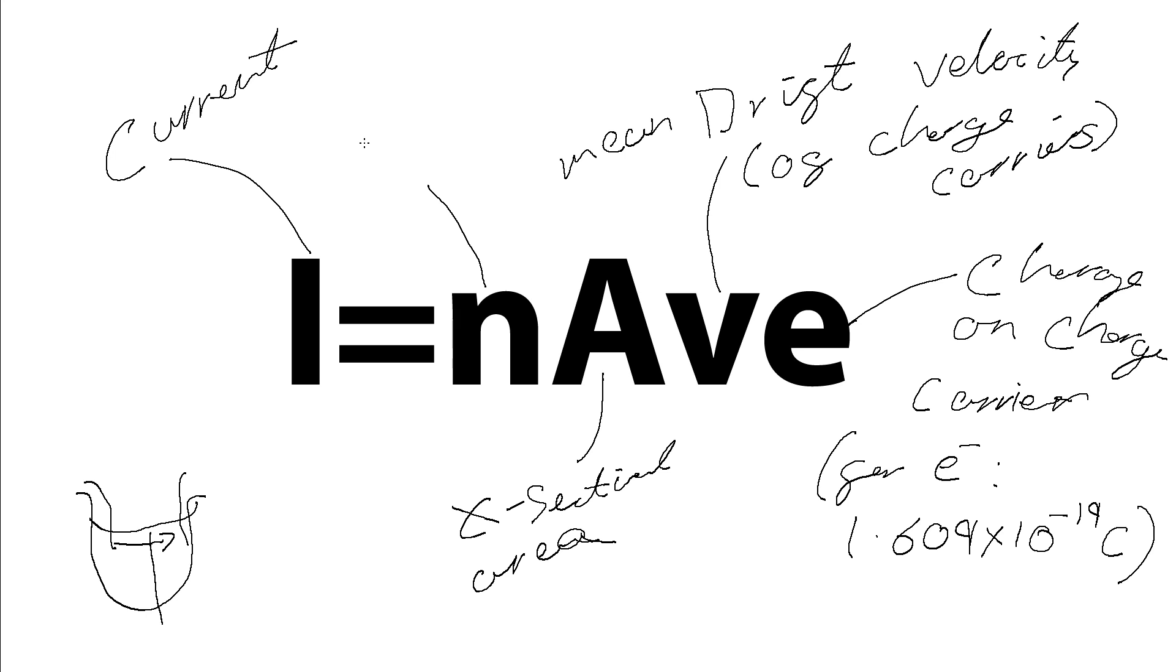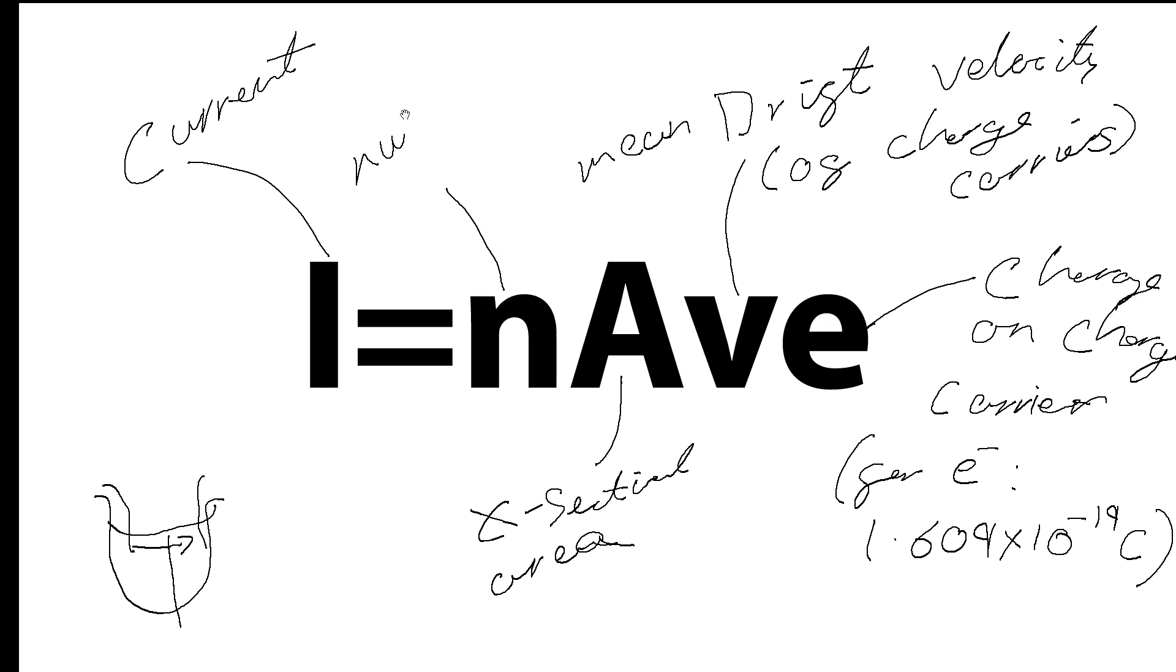And this here, it's what is known as the number density of the carriers, of the charge carriers. So this current would be in amps. This drift velocity would be in meters per second. This charge is in coulombs, of course. And this number density of charge carriers is in per meter cubed. So what it is, is it's saying, in a given volume, how many of these charge carriers do we have?